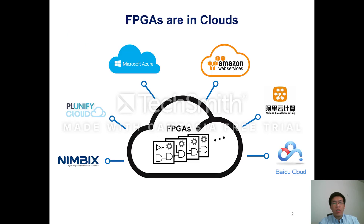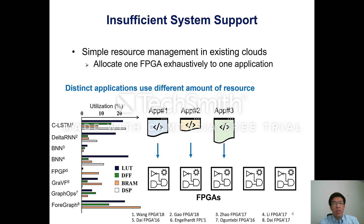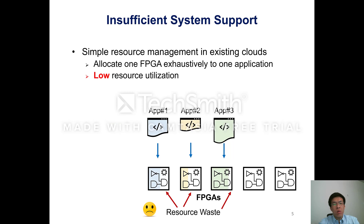In the past several years, FPGAs have been deployed into several clouds to support on-demand acceleration. However, the system support for FPGAs in the cloud environment is insufficient. The resource management strategy is simple: in the existing cloud, one FPGA is exhaustively allocated to one application regardless of the amount of resources used. But we have observed that diverse applications use distinct amounts of resources, so this simple strategy could lead to low resource utilization.